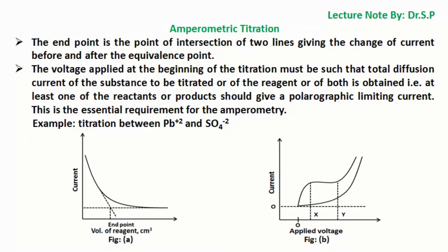The end point is the point of intersection of two lines giving the change of current before and after the equivalence point. The voltage applied at the beginning of the titration must be such that total diffusion current of the substance to be titrated or of the reagent or of both is obtained, that is at least one of the reactants or products should give a polarographic limiting current. This is the essential requirement for amperometry.